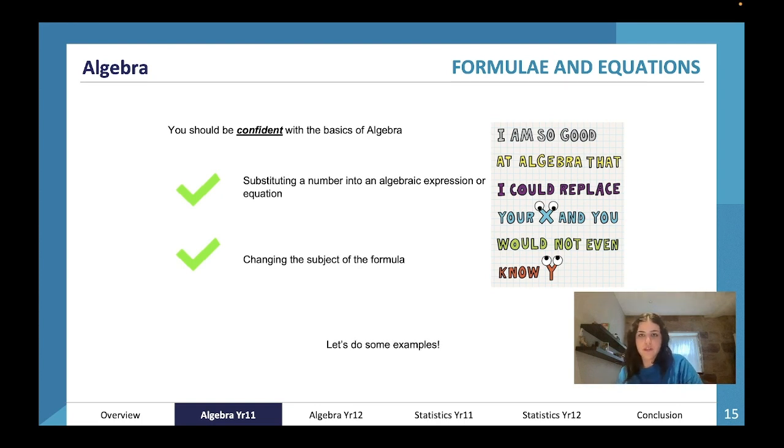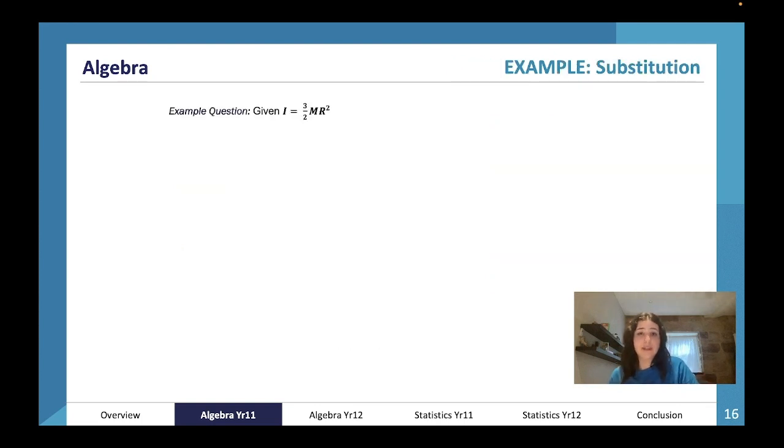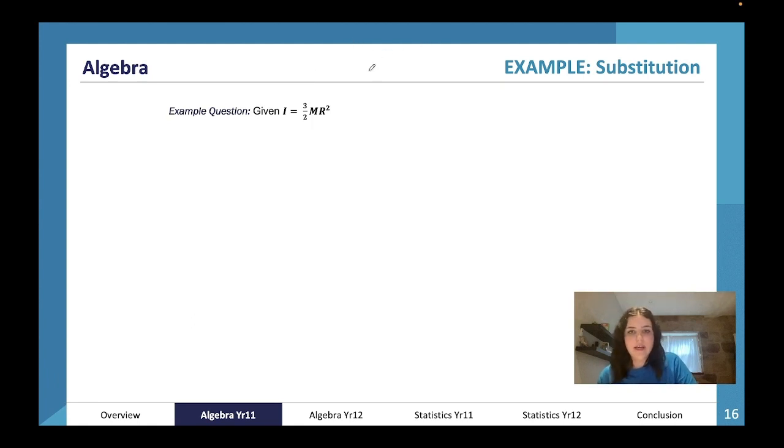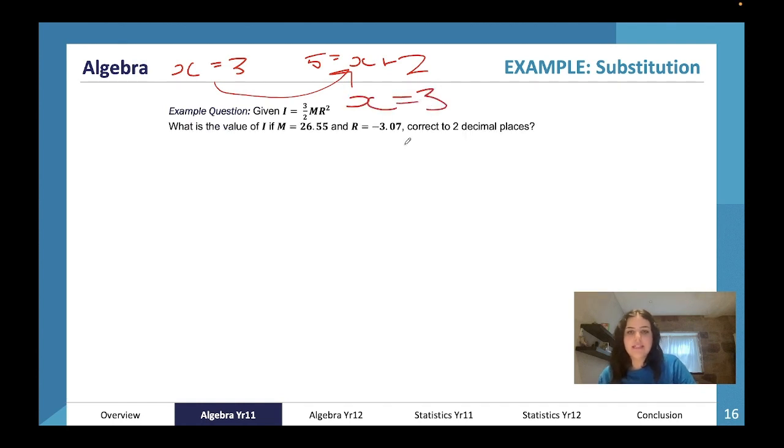Just because they're prelim knowledge doesn't mean they won't form the basis of those questions. We're going to have a look at some examples. So substitution, if you don't remember from year 11, is when you take one part of a formula - let's say we have 5 equals x plus 2 - and you are given a piece of information and you substitute it into the formula. So x equals 3.